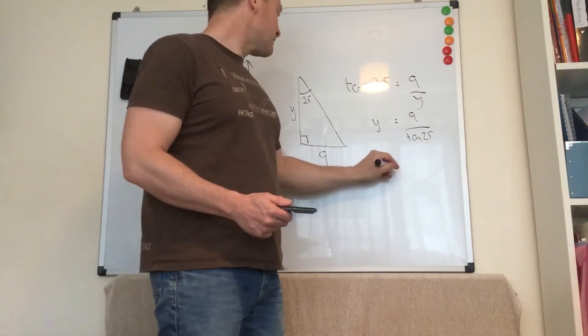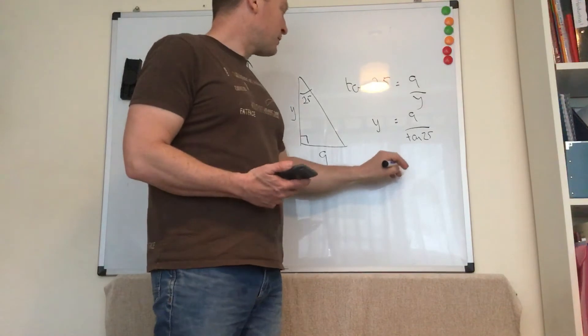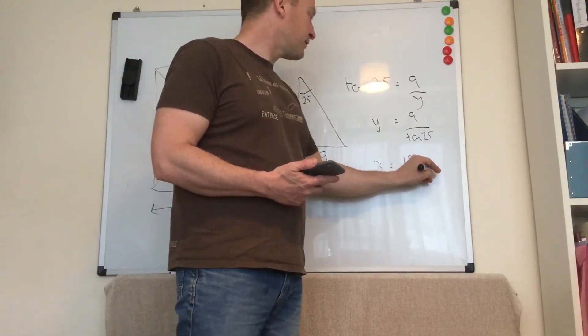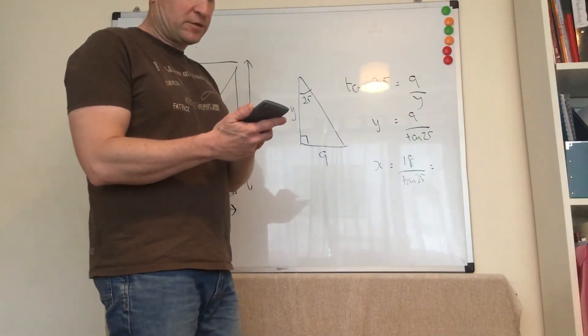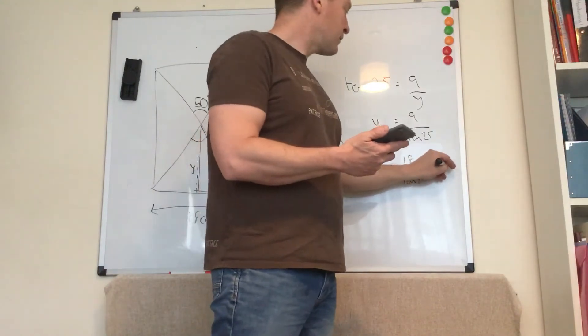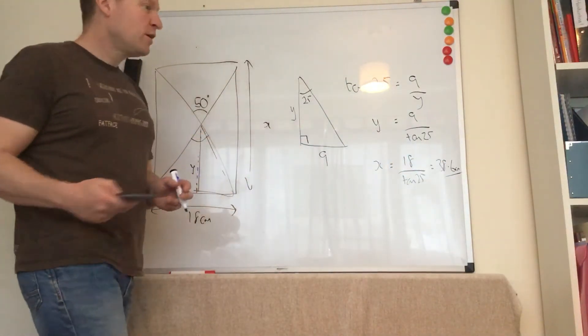X will equal double that because x is double y. So that'll come out at 18 over tan 25. 18 divided by tan 25. 38.6 centimeters. Okay.